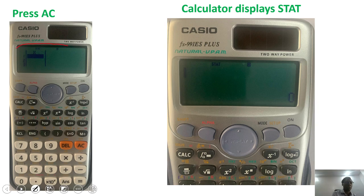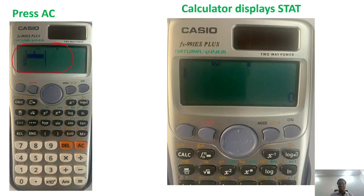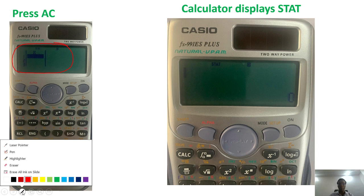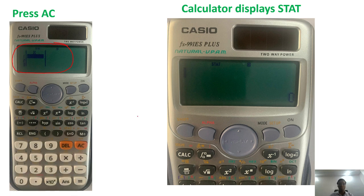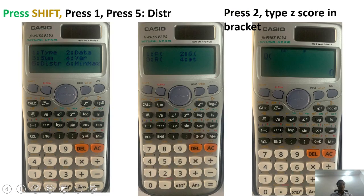And then once you do that, the calculator displays this, and then you can press AC. If you press AC, the calculator will display at the top VSTAT, which is statistics. It tells us that it's been set up.